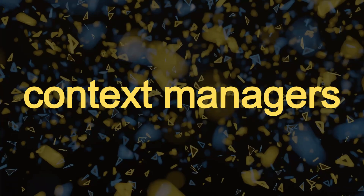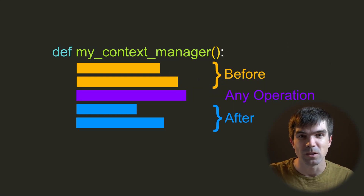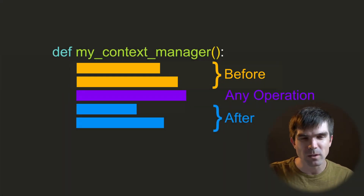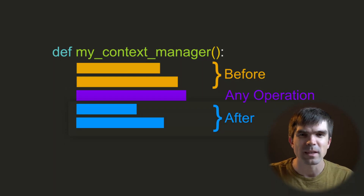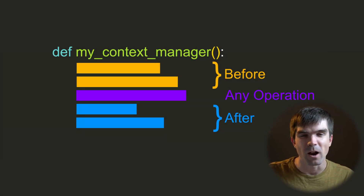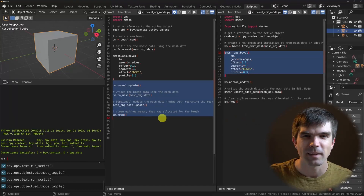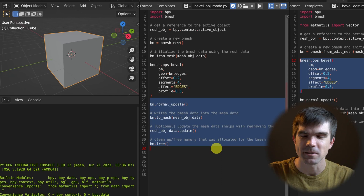It's called context managers, and what this allows us to do is run some code before something, do our operations, and then run some code after we're done. Let me update the code and show you how this looks.